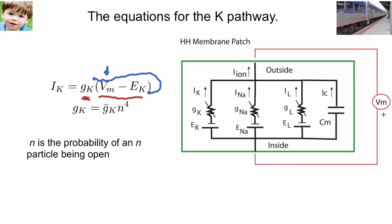It's Vm minus EK, this whole entire composite effect. That is to say, the current that flows, IK, is dependent on Vm minus EK. So the current that flows on the K pathway is proportional to Vm minus EK.